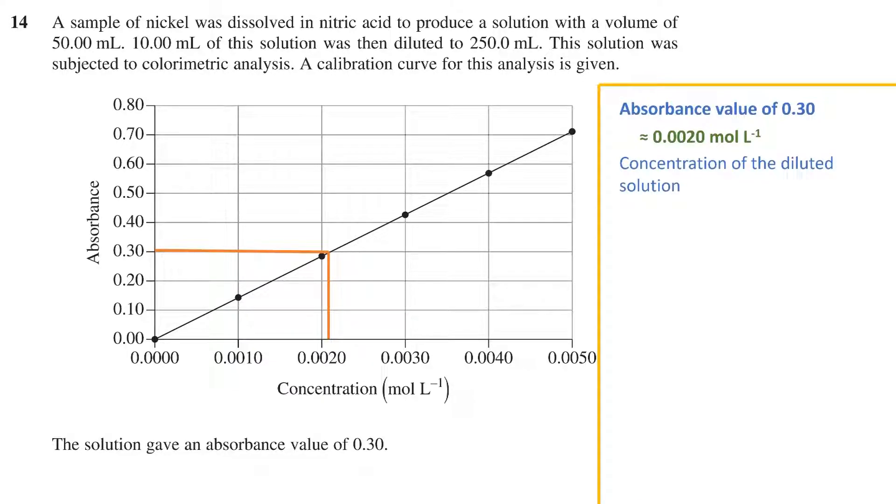The original solution, which had the nickel sample dissolved in it, was diluted in the process. To calculate the dilution factor, we divide the diluted solution volume by the original solution volume. In other words, 250 divided by 10,